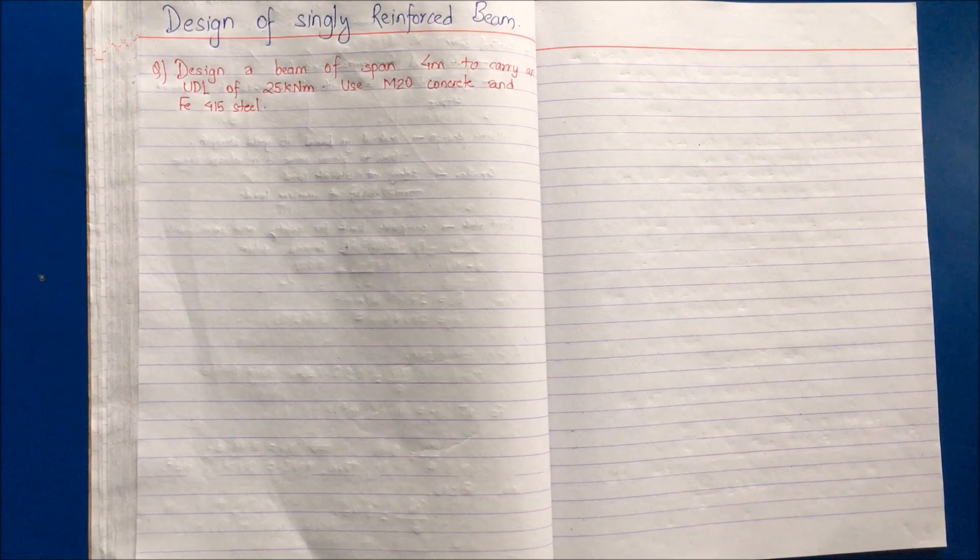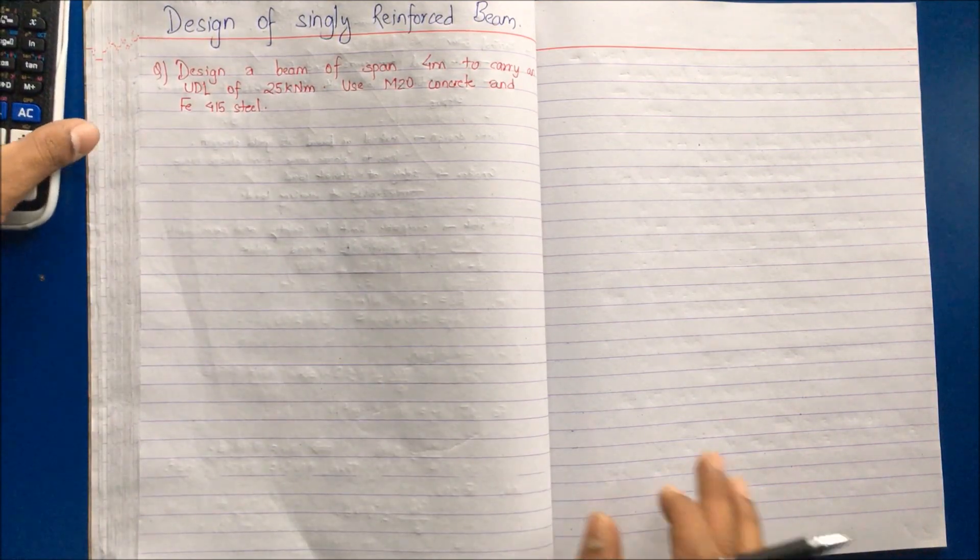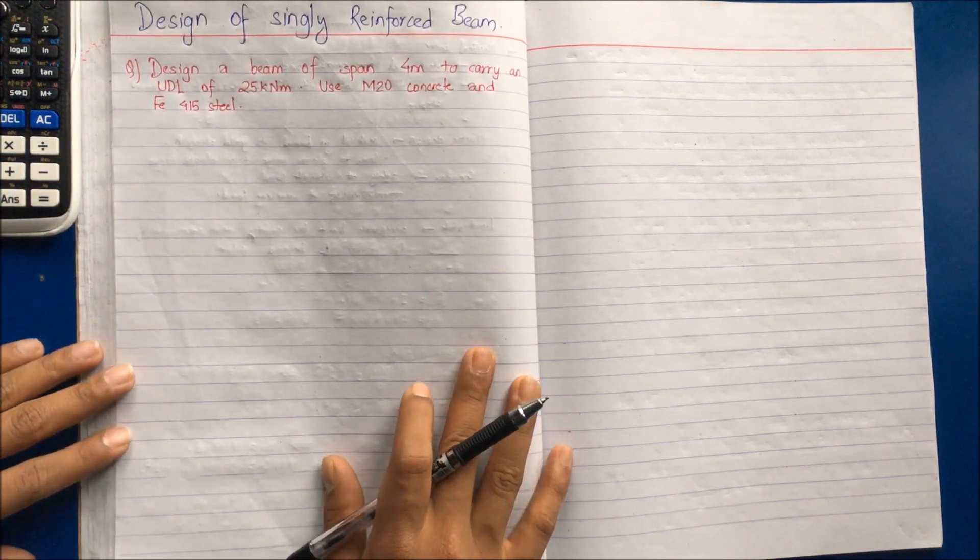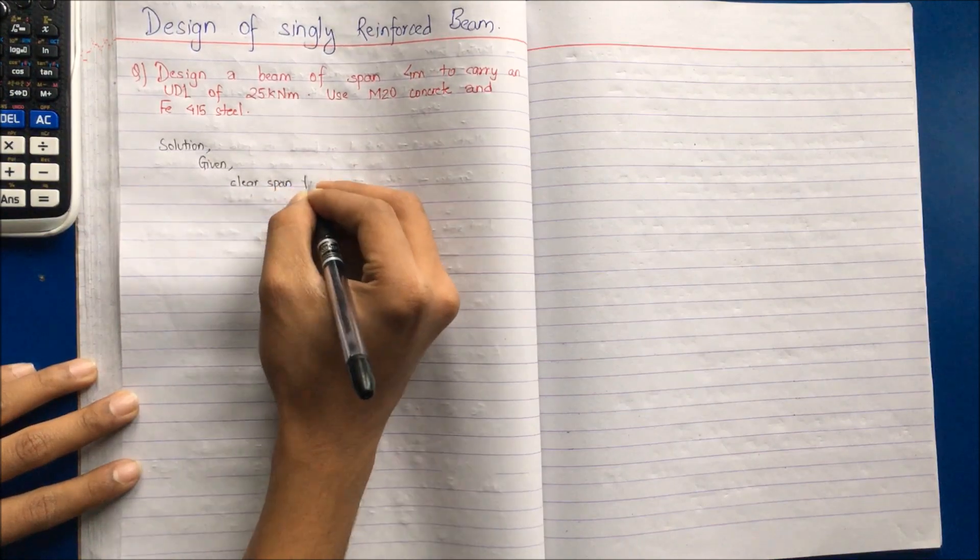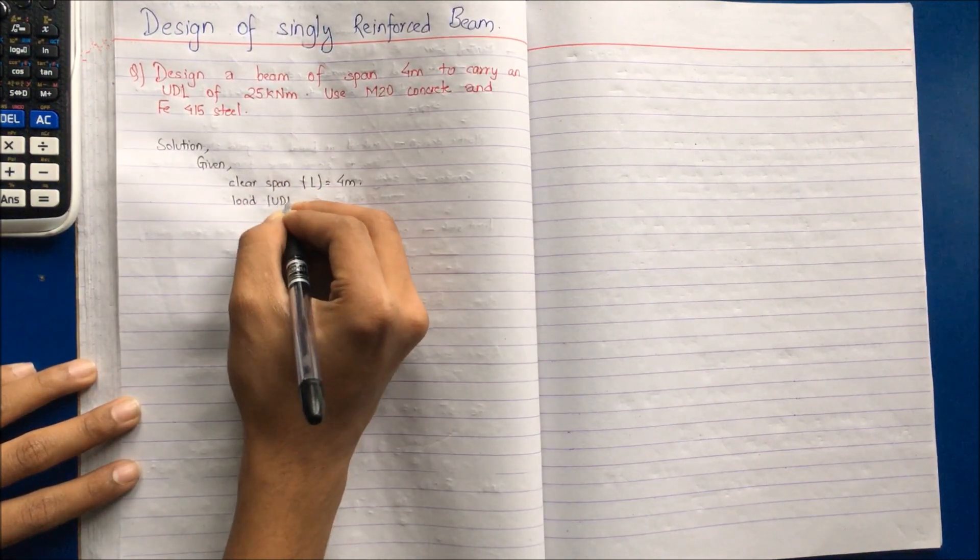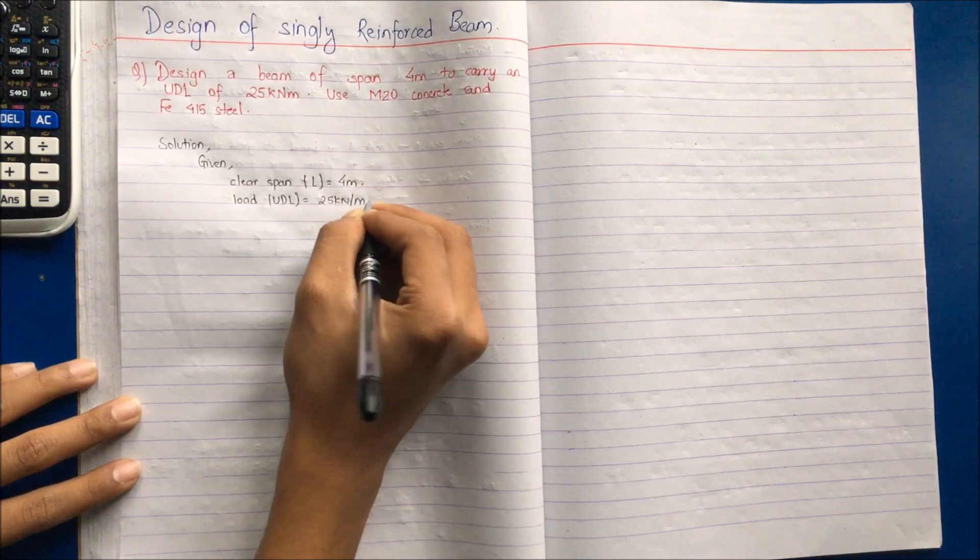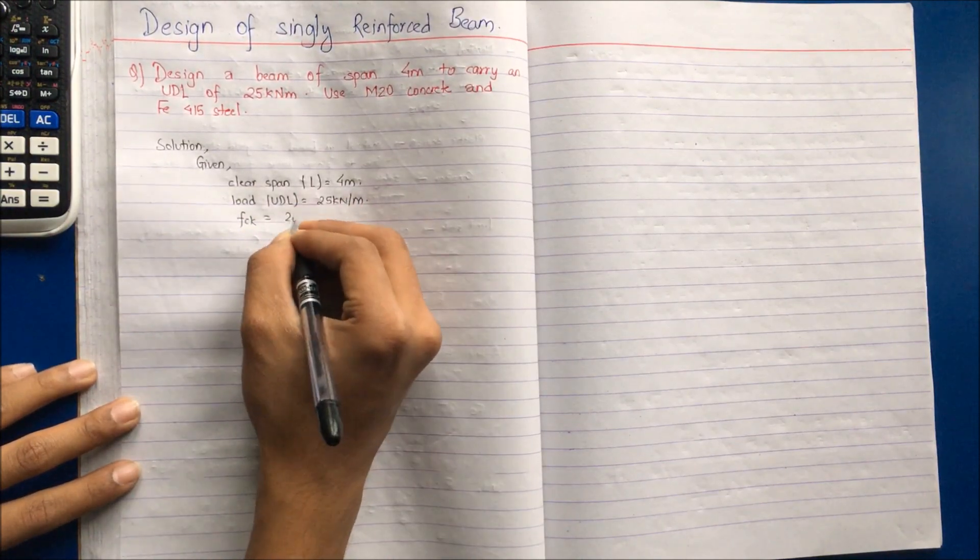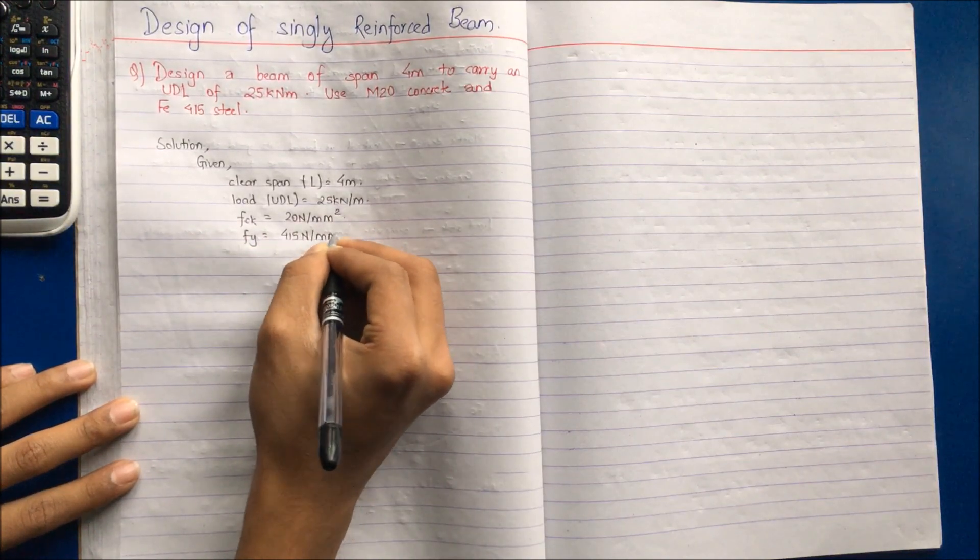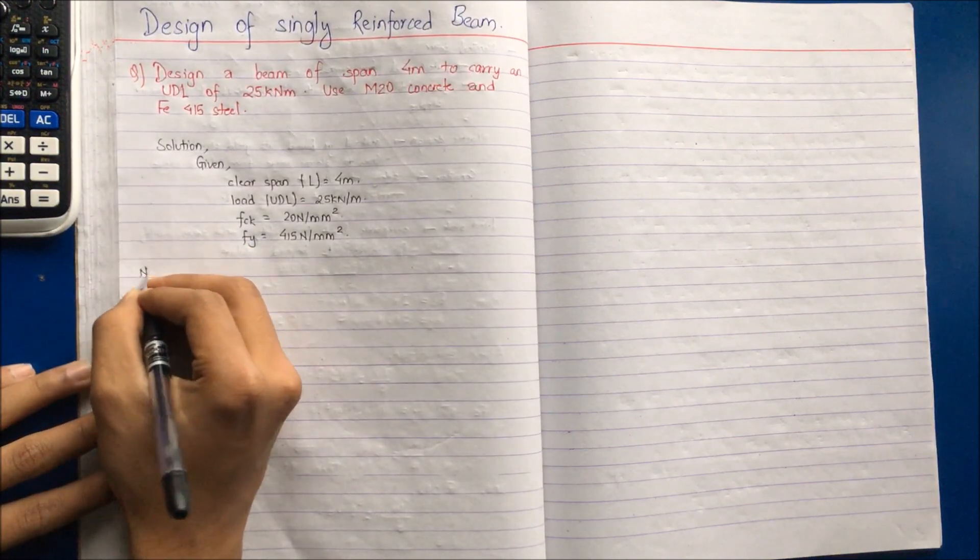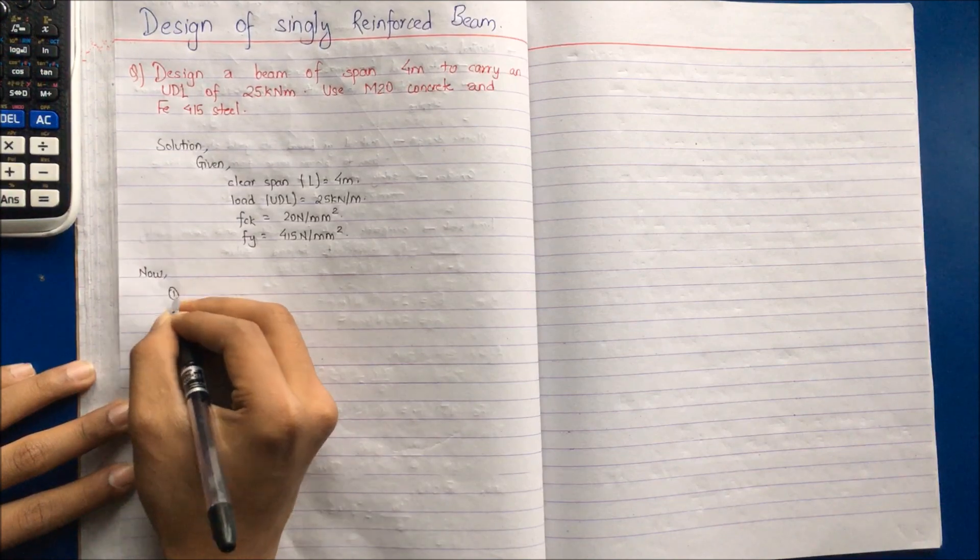For this, I have a question over here that says, design a beam of span 4 meter to carry an UDL of 25 kN per meter using M20 concrete and Fe-415 steel. Writing down the given terms: clear span L is equal to 4 meter, load that is UDL 25 kN per meter, FCK that is the characteristic strength of the concrete 20 N per mm square and FY that is the yield strength of steel 415 N per mm square. It is also known as Tor steel.